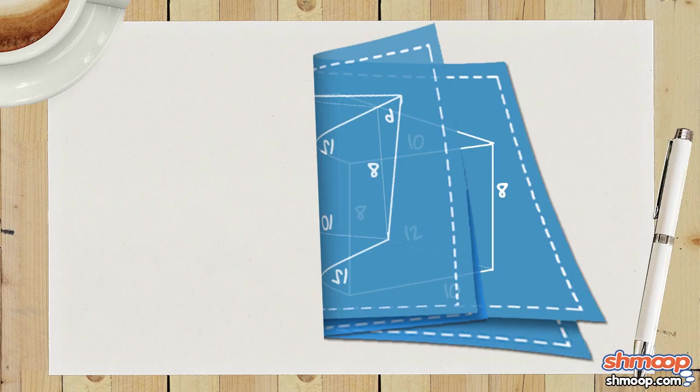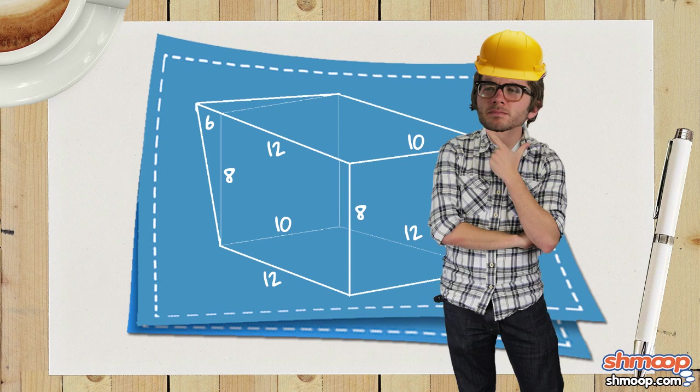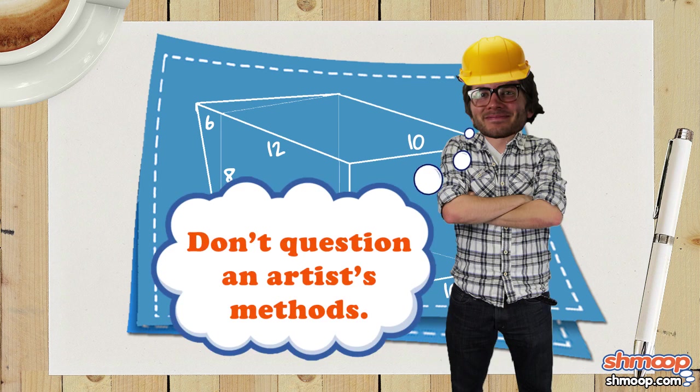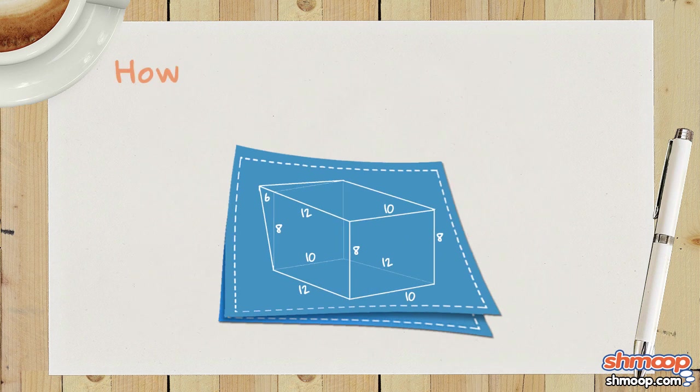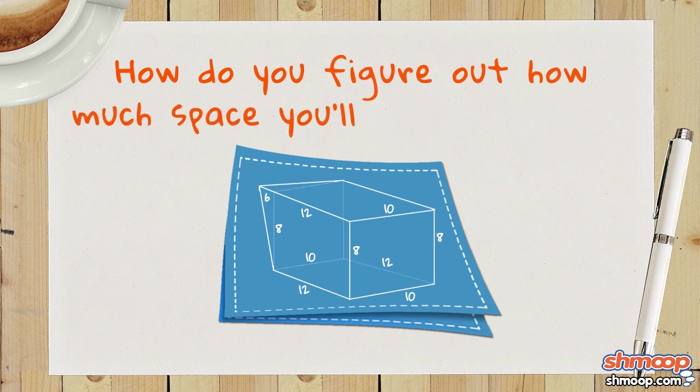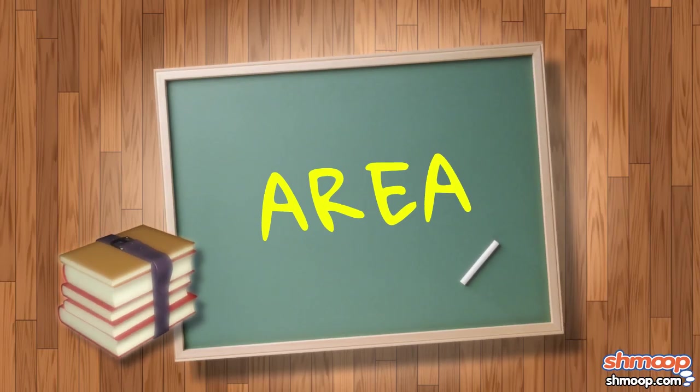But all the bedroom walls are different shapes and sizes. Thanks to the creative architect, there are even some triangles in there. So how do you figure out how much space you'll need to cover? That's where area comes in.